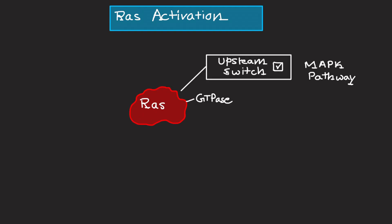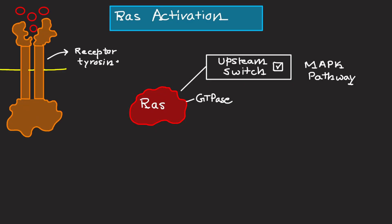Now let's talk about RAS activation, which is the first step in this pathway. RAS, a small GTPase, acts as an upstream switch for the MAP kinase pathway. When receptor tyrosine kinases — also known as RTKs — are activated by ligands such as growth factors, hormones, and cytokines, they undergo autophosphorylation.